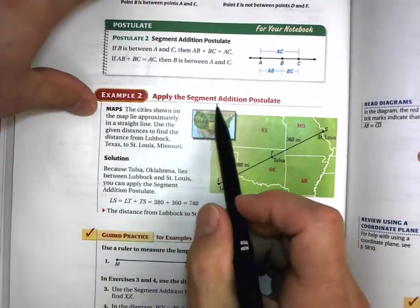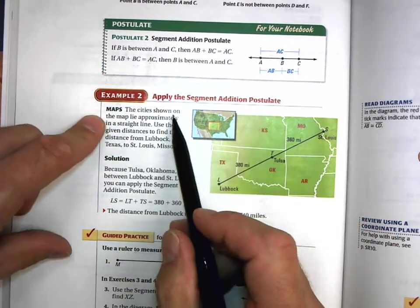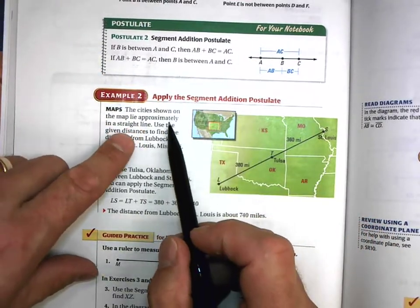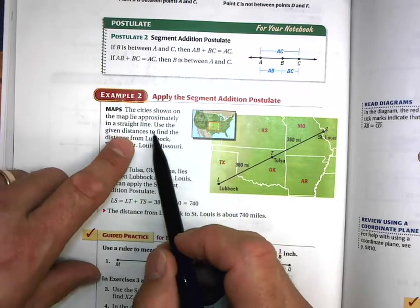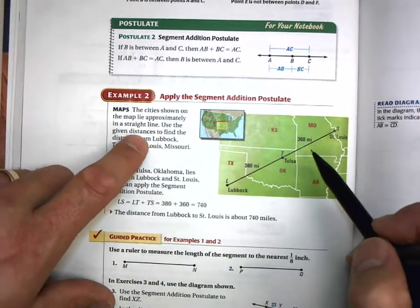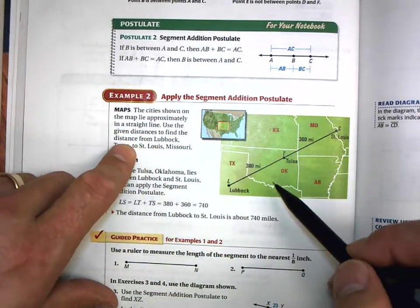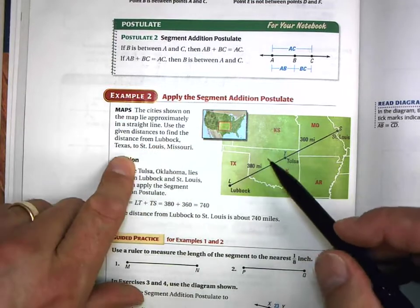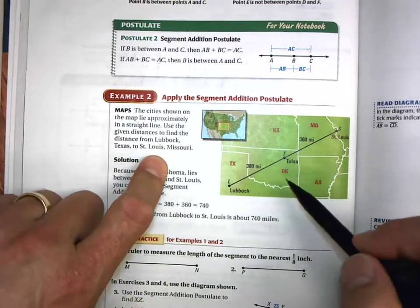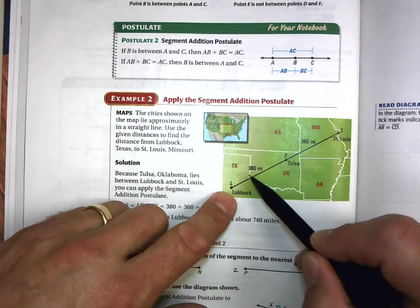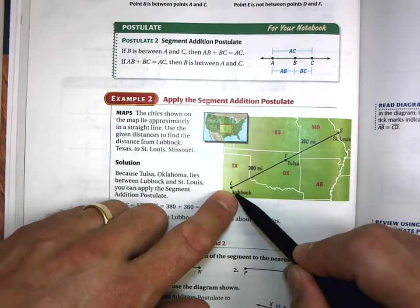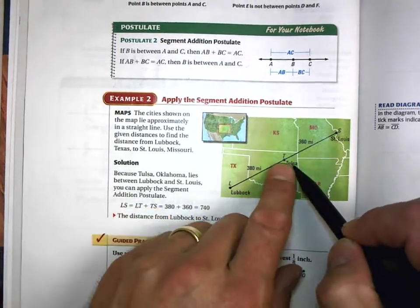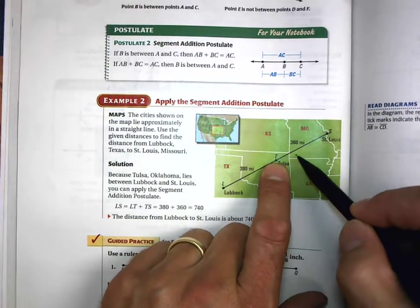Example number two: Apply the Segment Addition Postulate. Cities shown on the map lie approximately in a straight line. Use the given distances to find the distance from Lubbock, Texas to St. Louis, Missouri.